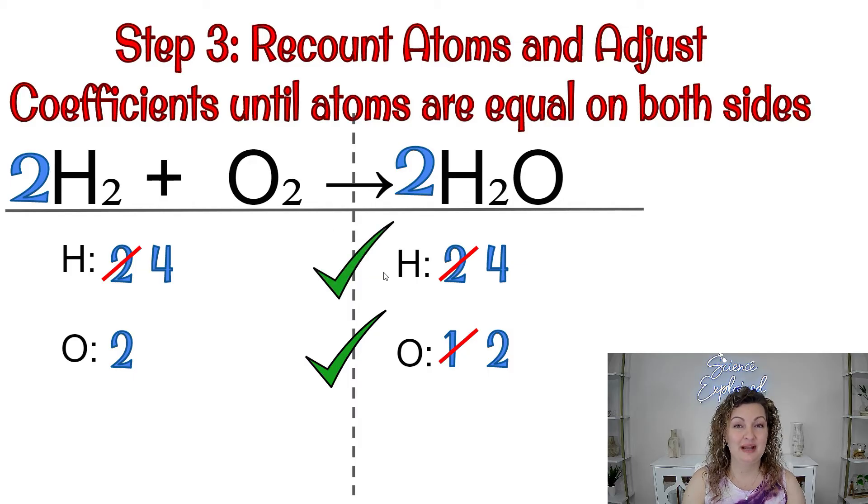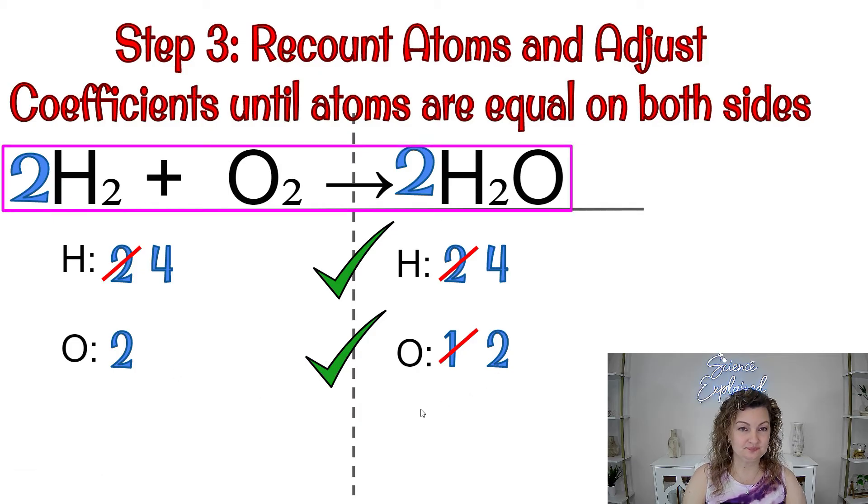Now I am balanced throughout the entire equation. I have four and four and two and two, so we are good to go. This is my answer. It's the entire equation, you guys.